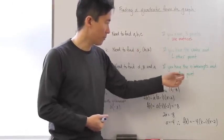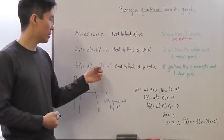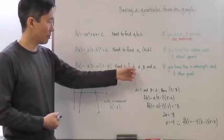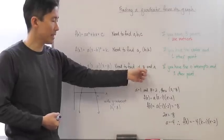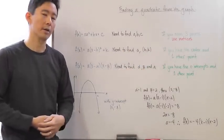If you have the x-intercepts and one other point, then you should use the intercept form because you'll know what alpha is, what beta is, and if you have one other point, you can find out what a is.